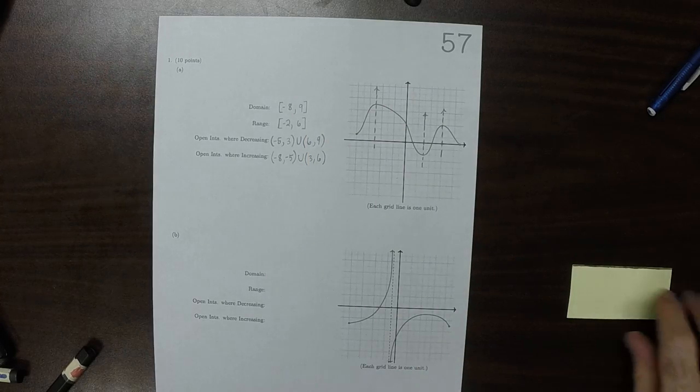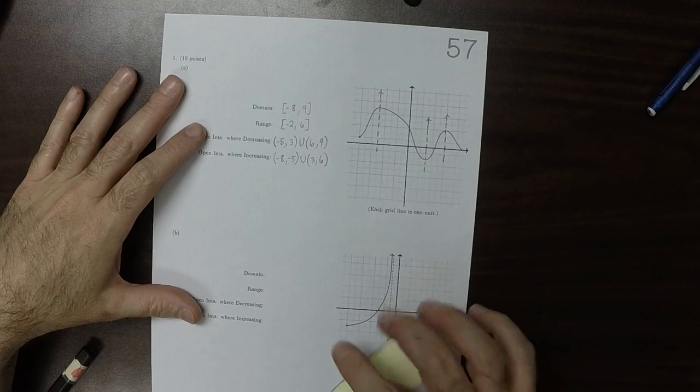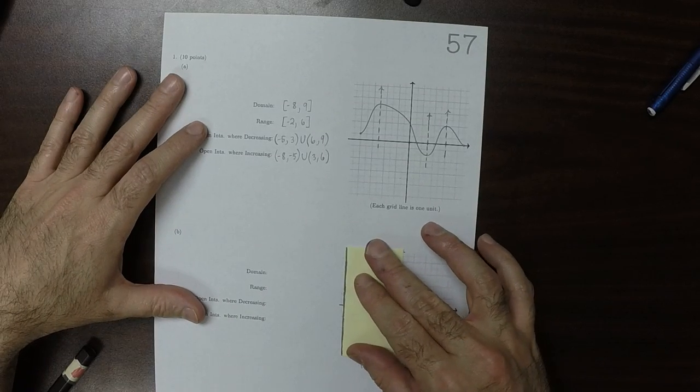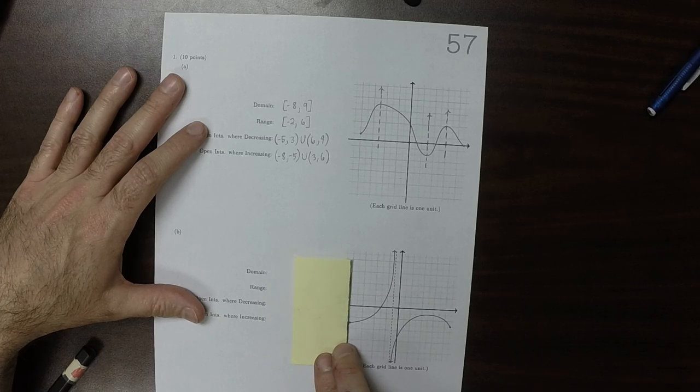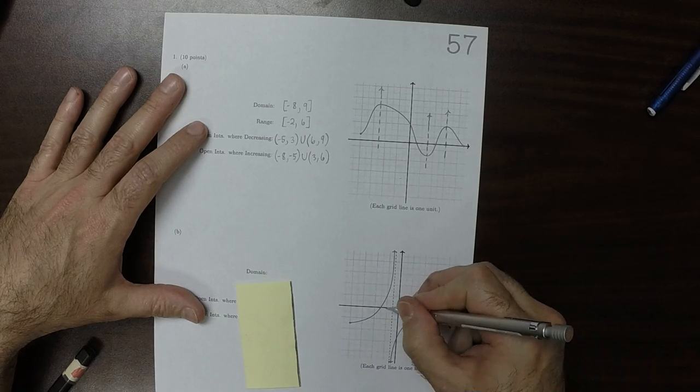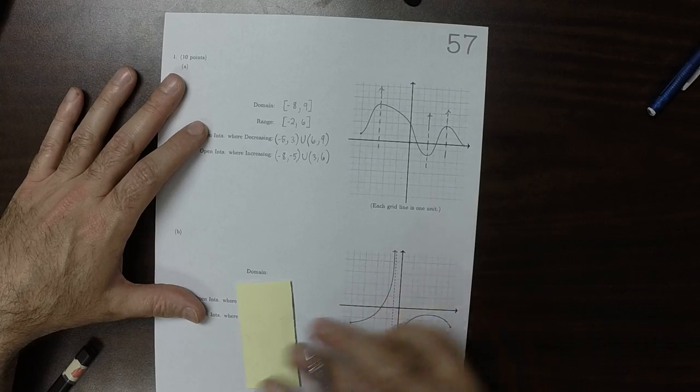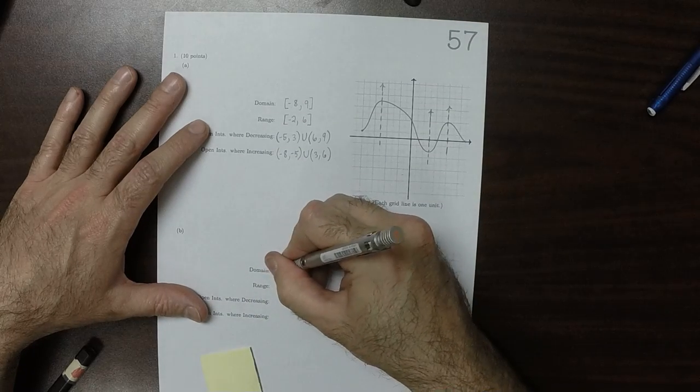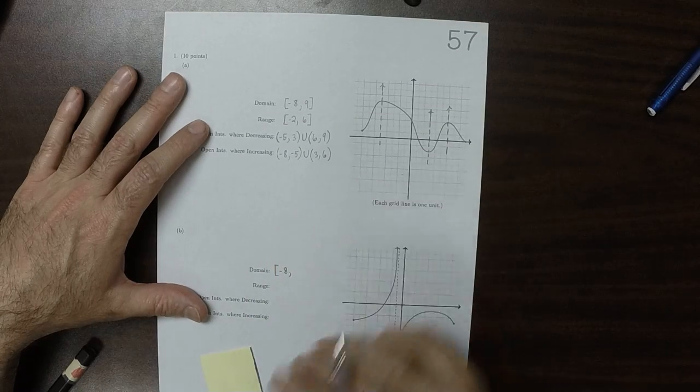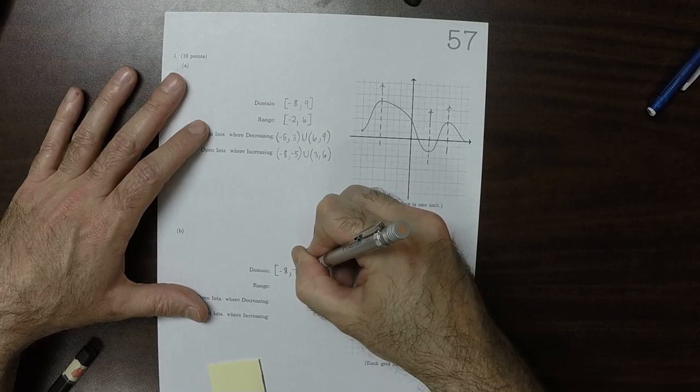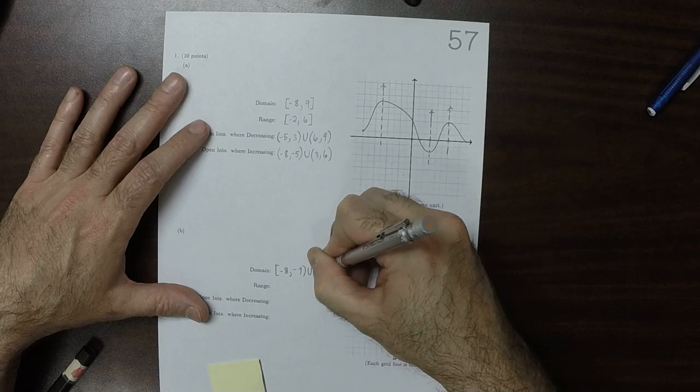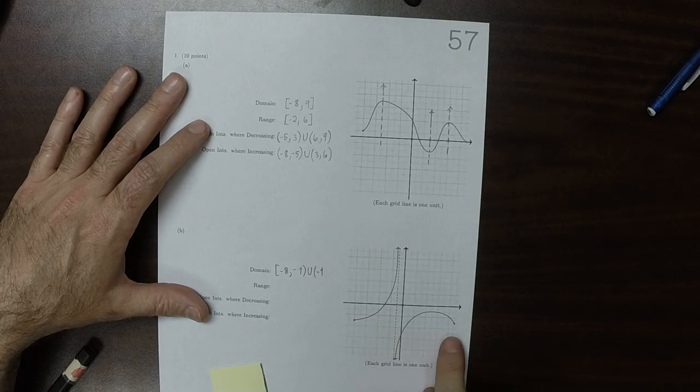So then the domain here, set of all x values. You can see that the domain begins right there. So that is negative 2, 4, 6, 8, up to that asymptote which is not present, and then up to 9.